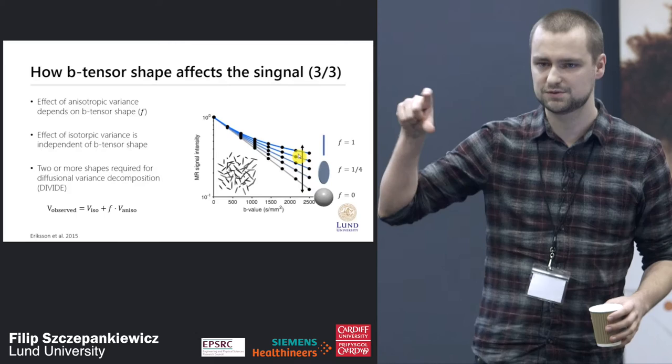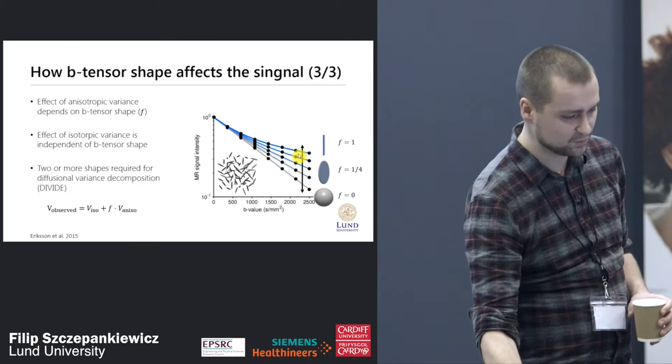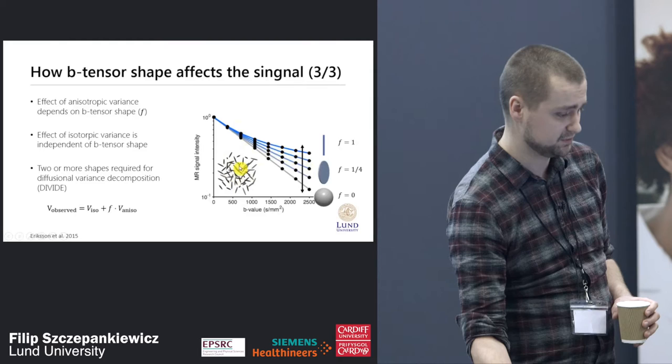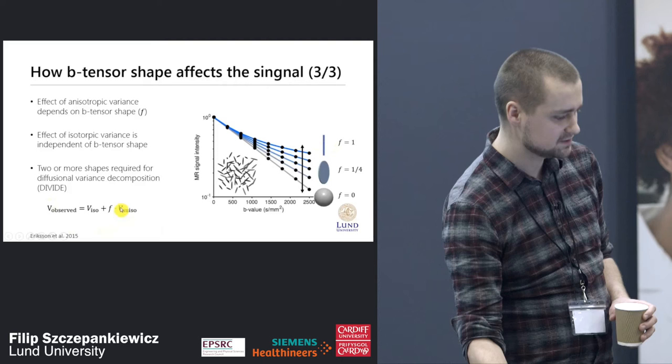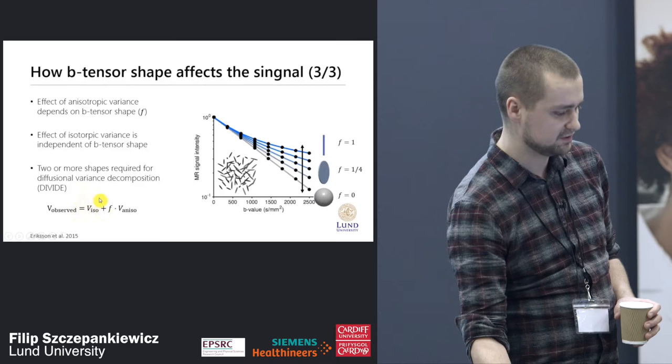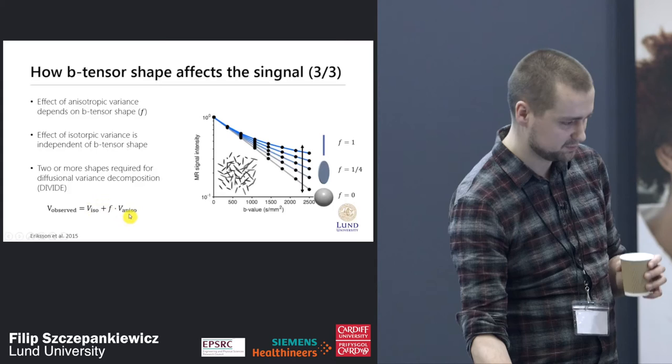We can use any shape of the encoding tensor — we only need to know the encoding tensor's anisotropy or shape. Depending on that, we get a different modulation depending on how much anisotropy is in the sample. With more than one of these tensors, we can plug it into a simple equation where the observed variance is a sum of the isotropic variance from isotropic components plus a weighting times the anisotropic variance.